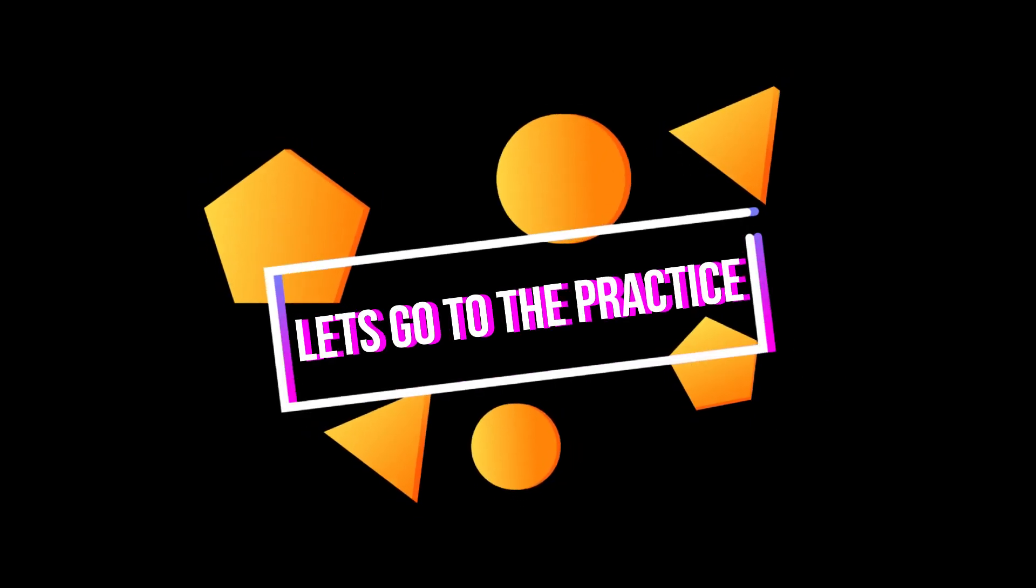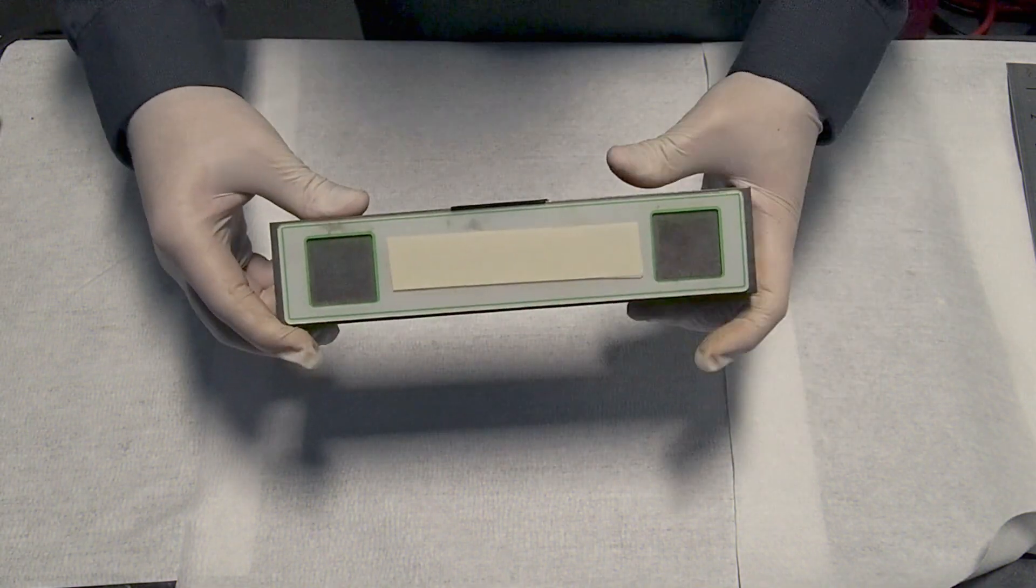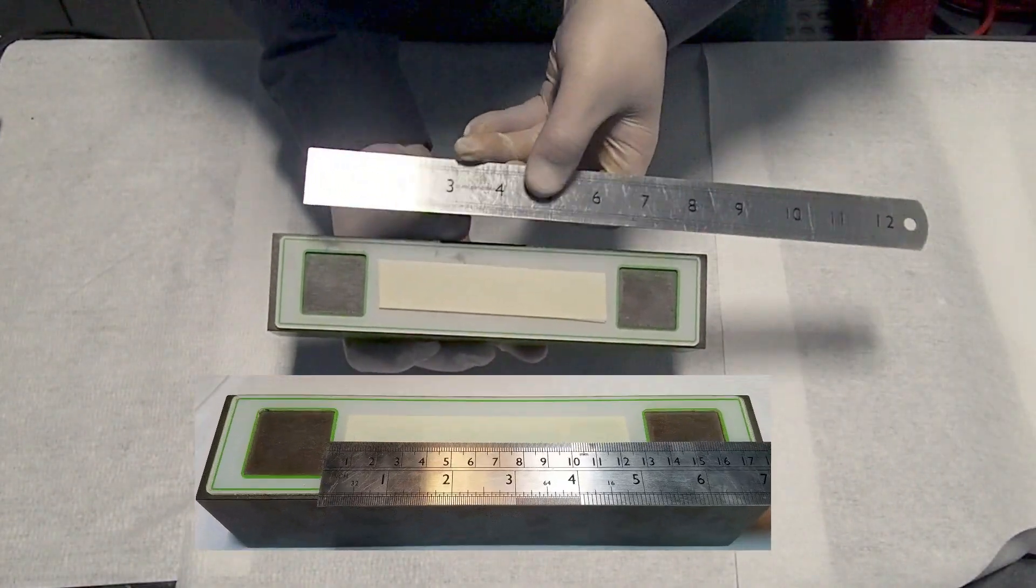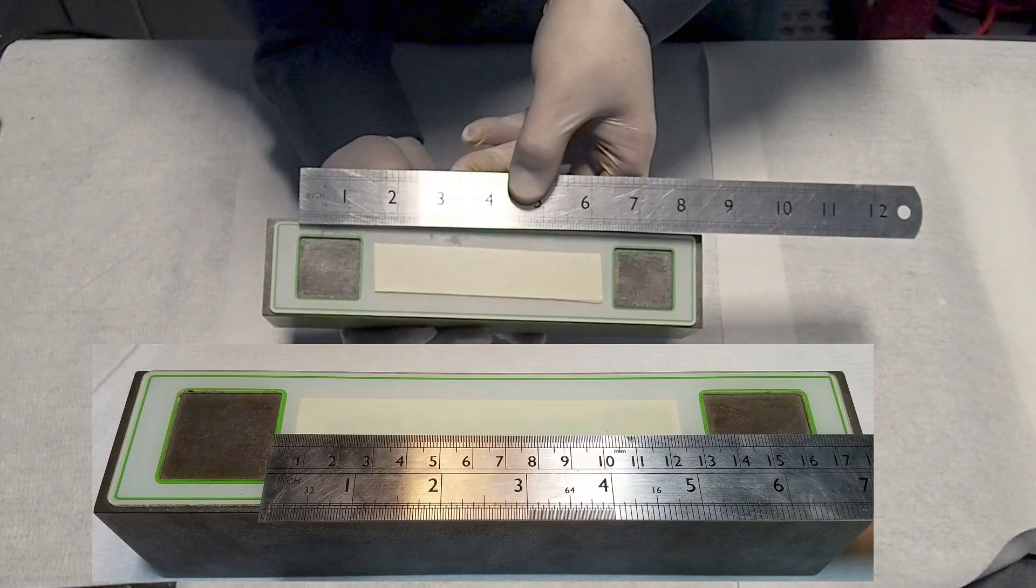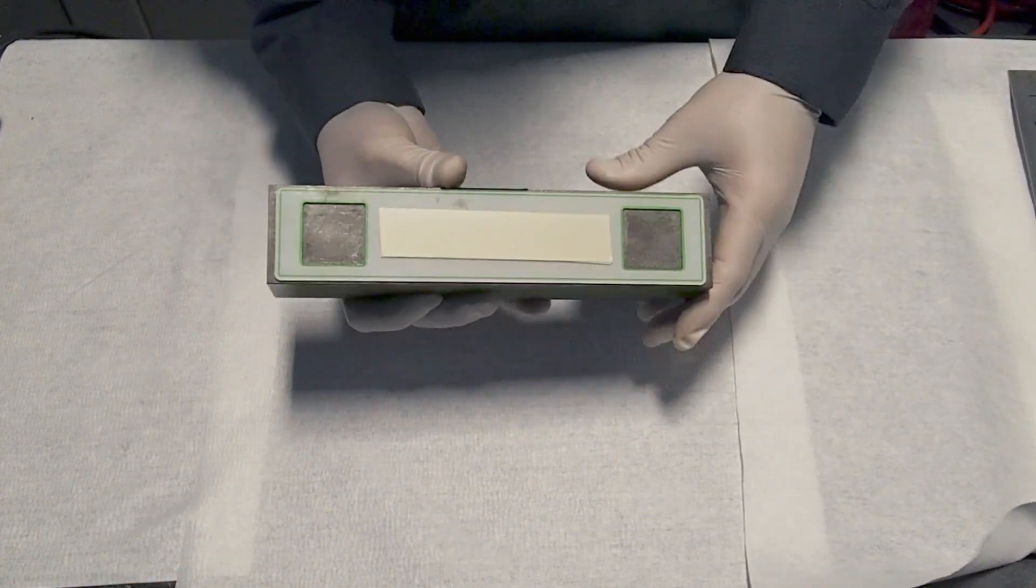Let's go to the practice. We are going to use a ferrous bar available with NDT providers. The bar has two footprints whose separation is not more than 6 inches. On these footprints the legs of the yoke will be placed.